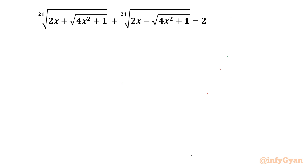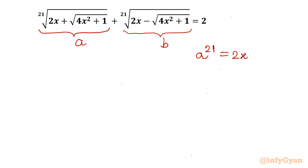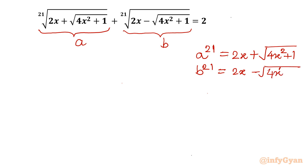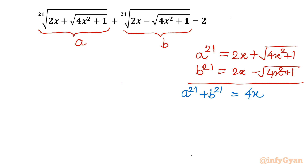I will begin with a substitution straight away. The first radical I will consider as a, and the second radical as b. So a²¹ = 2x + √(4x²+1), and b²¹ = 2x - √(4x²+1). Once I add both equations, a²¹ + b²¹ equals 4x, since the square root terms cancel with the plus and minus.